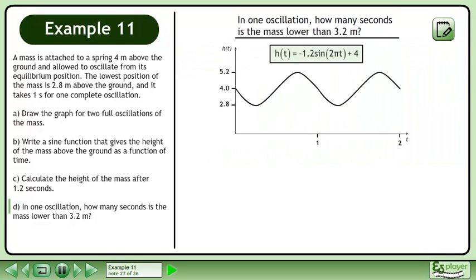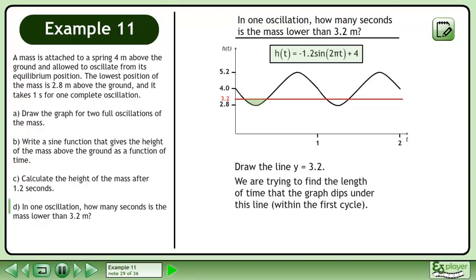Bring up the graph and its function. Draw the line y equals 3.2. We are trying to find the length of time that the graph dips under this line within the first cycle.